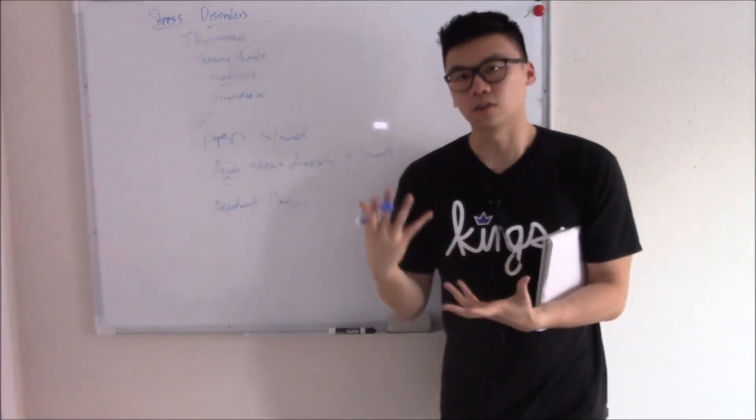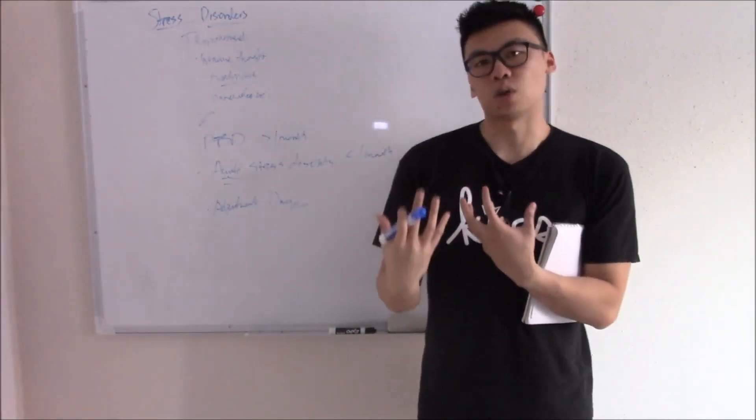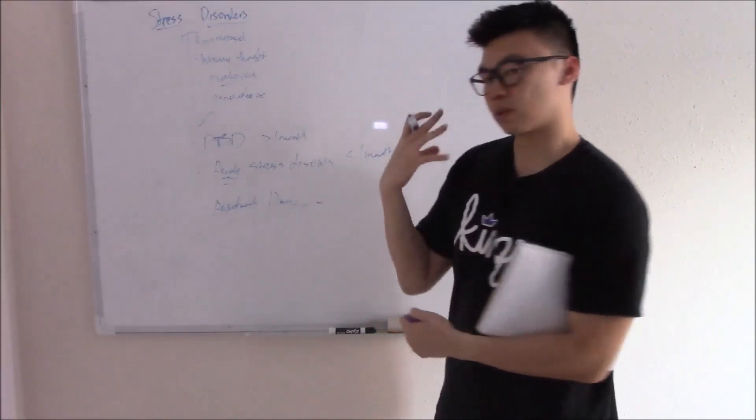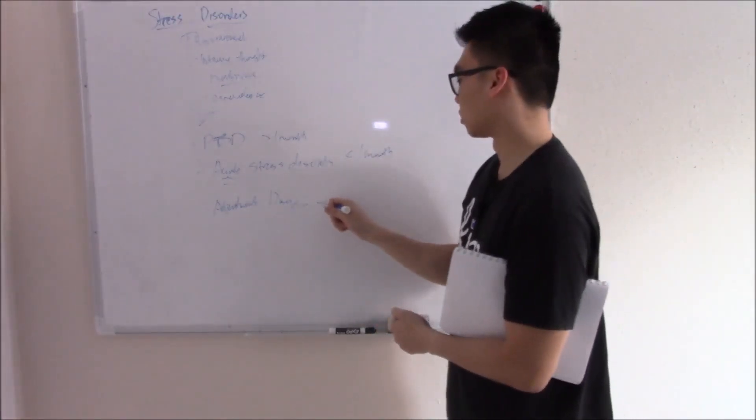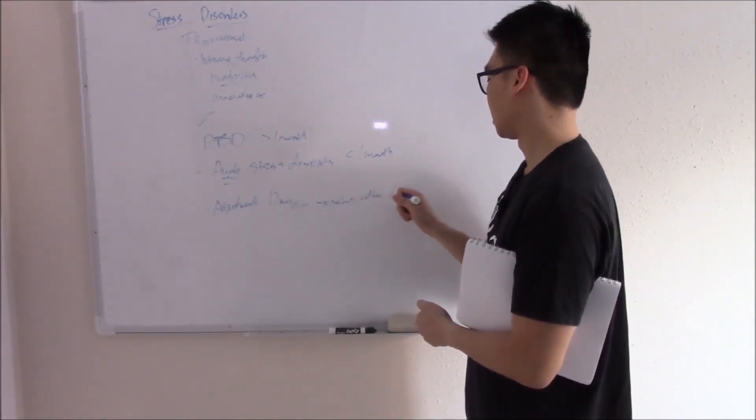Adjustment disorder is a little bit more difficult to classify. Adjustment disorder has symptoms that are more like depression: sadness, loss of interest. This is after a stressor and usually resolves within six months.